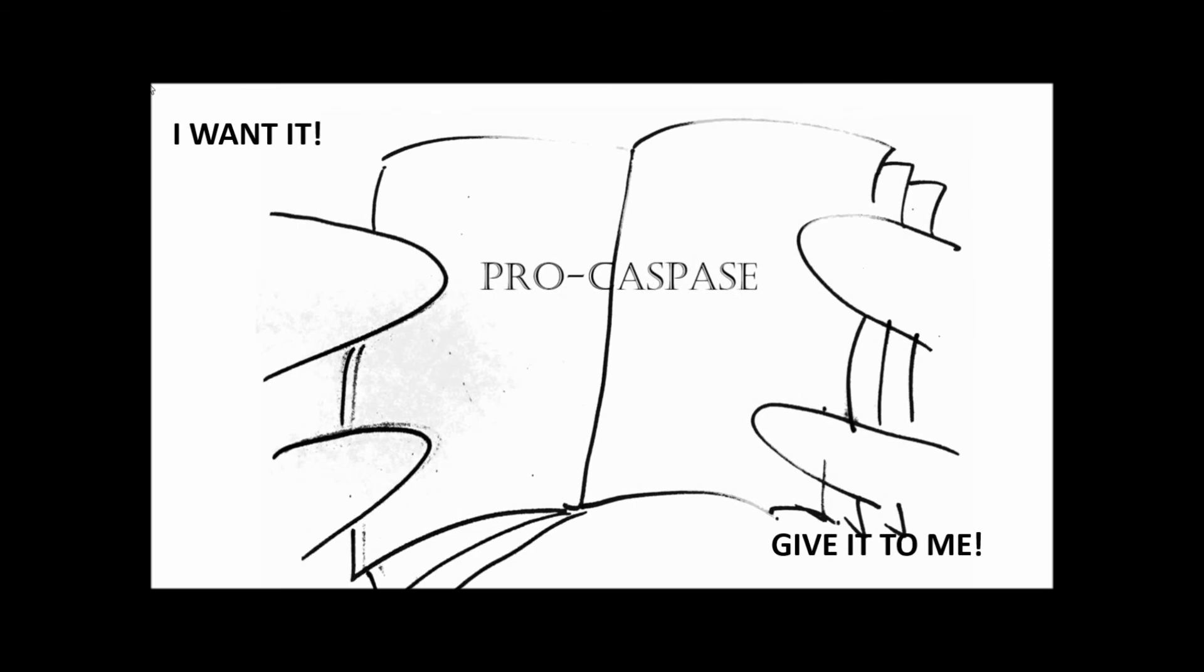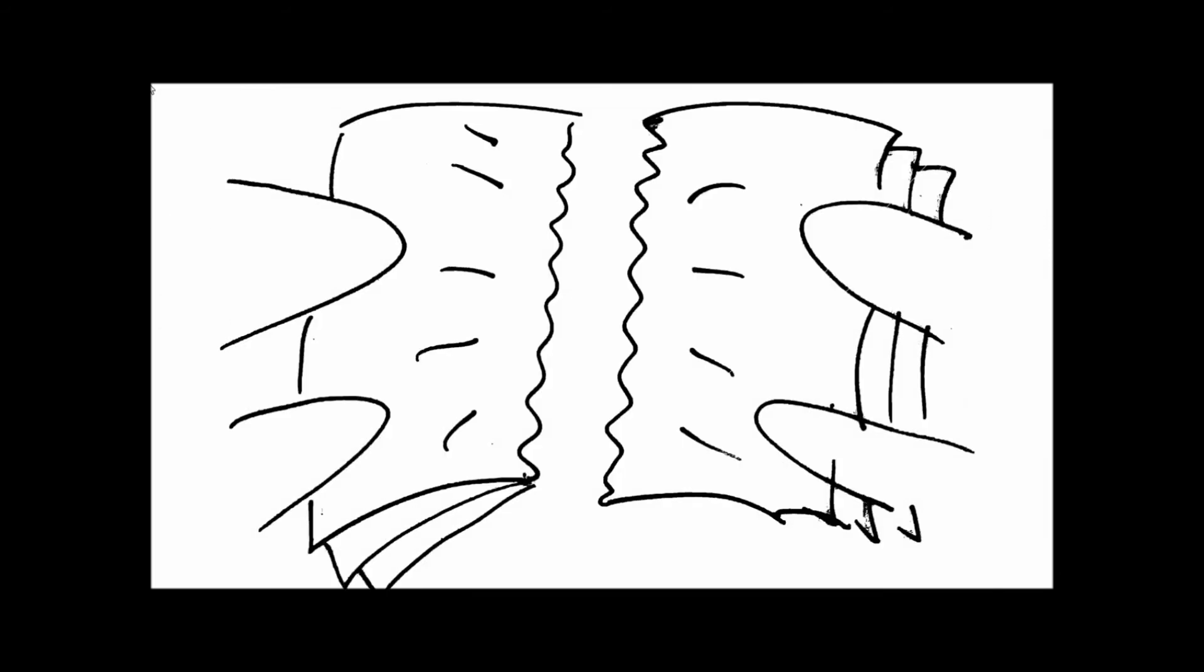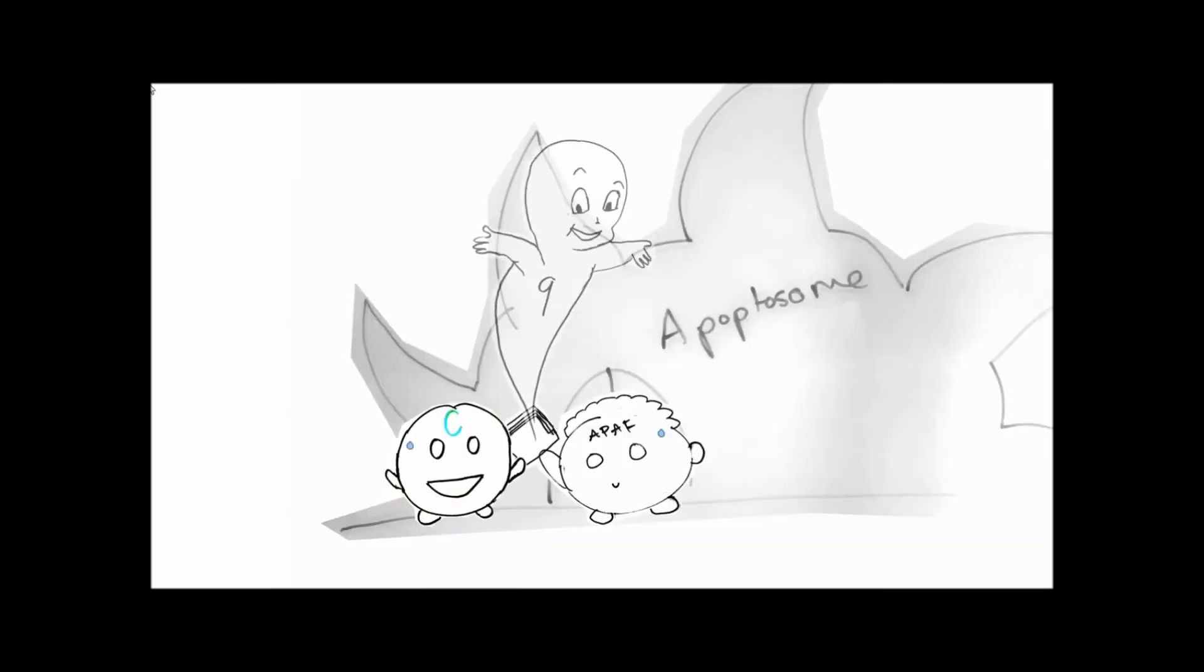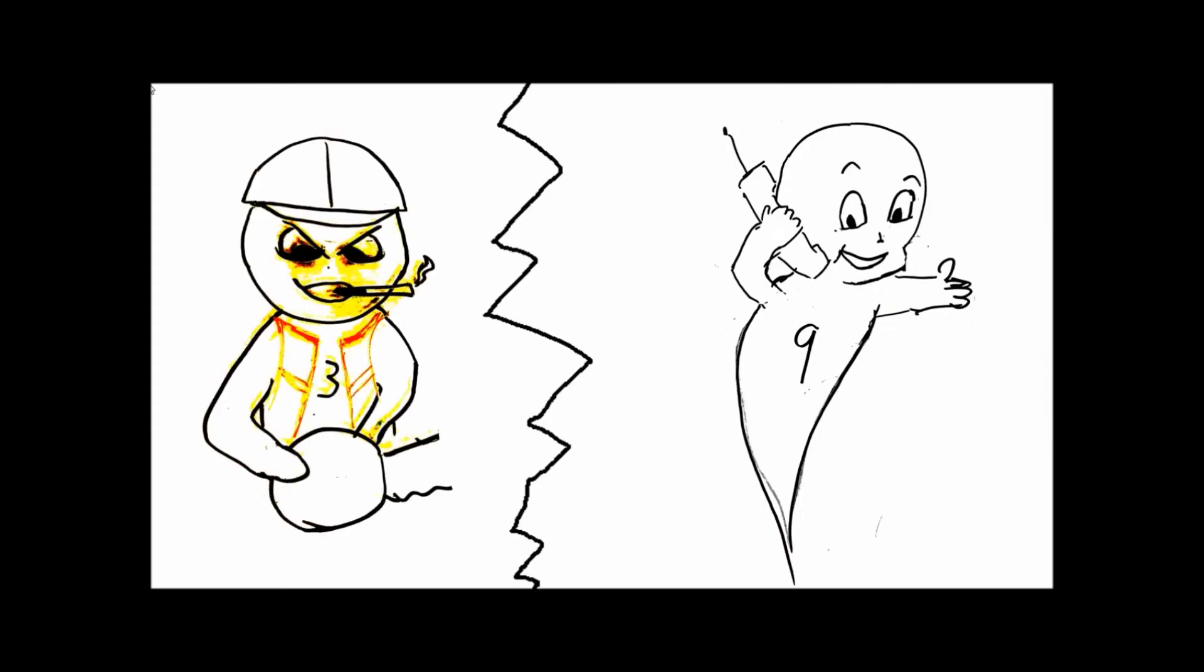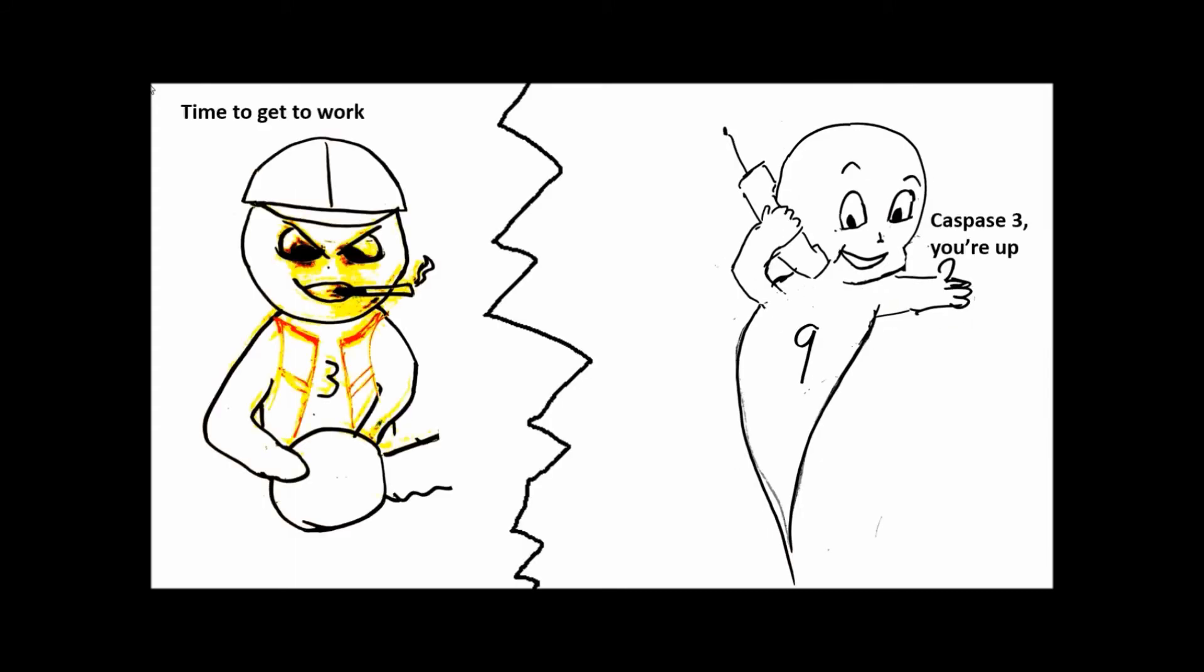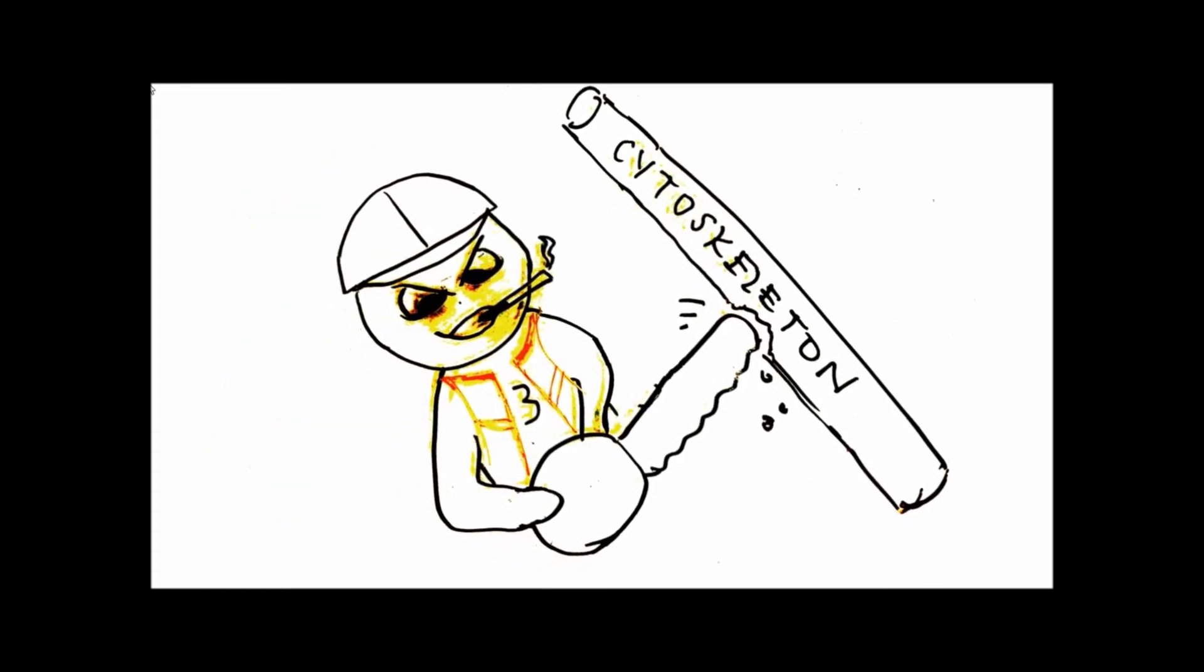This binding facilitates the cleavage of pro-caspase 9 to form initiator caspase 9. Caspase 9 then cleaves pro-caspase 3 to form effector caspase 3. Caspase 3 cleaves the cytoskeleton and proteins of the nuclear membrane.